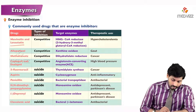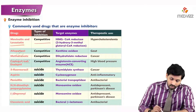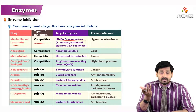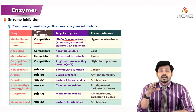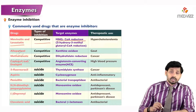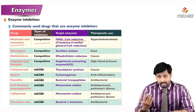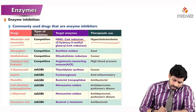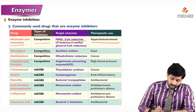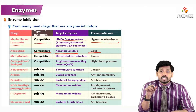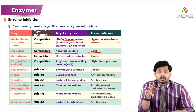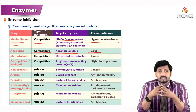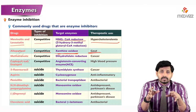Statin drugs like mevastatin inhibit HMG-CoA reductase, the enzyme involved in cholesterol synthesis, as competitive inhibitors. They are used to reduce cholesterol levels in hypercholesterolemia. Allopurinol is another competitive inhibitor example targeting xanthine oxidase, used in treatment of gout. In gout, uric acid crystals accumulate in joints causing pain; allopurinol converts xanthine to alloxanthine, which is more soluble and easily excreted in urine.